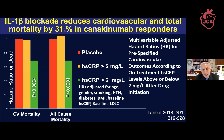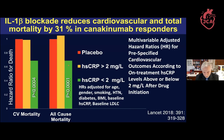The primary endpoint was met. In a pre-specified analysis looking at people who responded best to the intervention — the antibody canakinumab targeting IL-1-beta — by reducing their C-reactive protein below median, there was a greater than 30 percent decrease in cardiovascular mortality and in all-cause mortality, the holy grail of clinical trials.